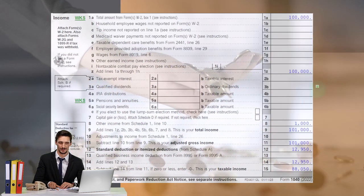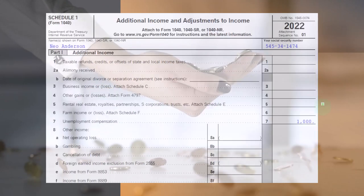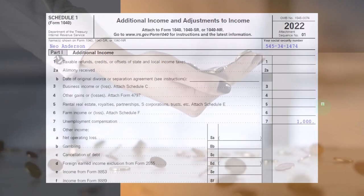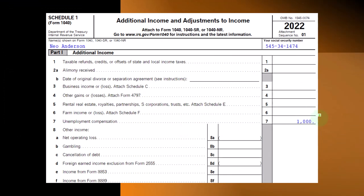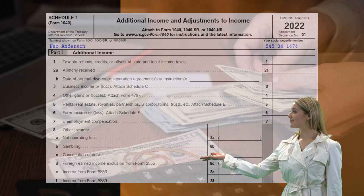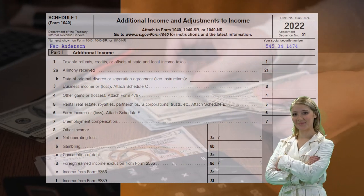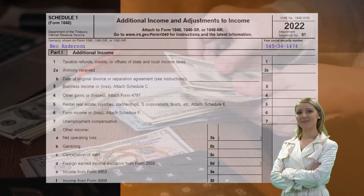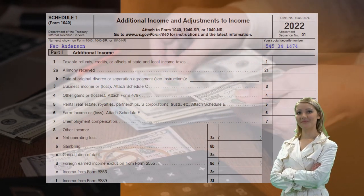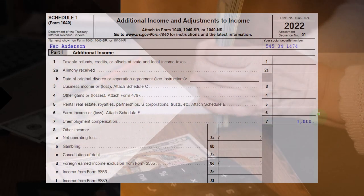So where would it be reported? We've got line 8, other income from Schedule 1, and on Schedule 1 we have unemployment compensation. You're generally going to get a form just like you would for any other kind of income. If it was the state that gave you the unemployment, that form would be a 1099-G.